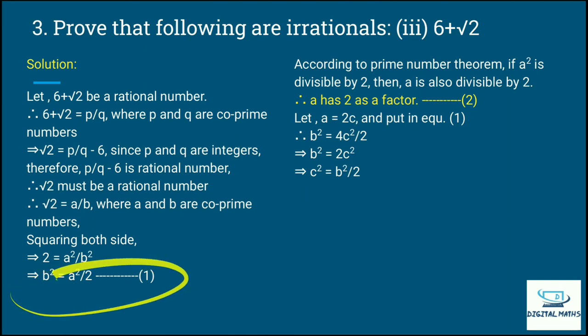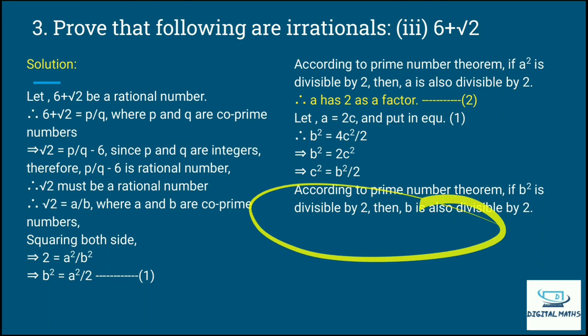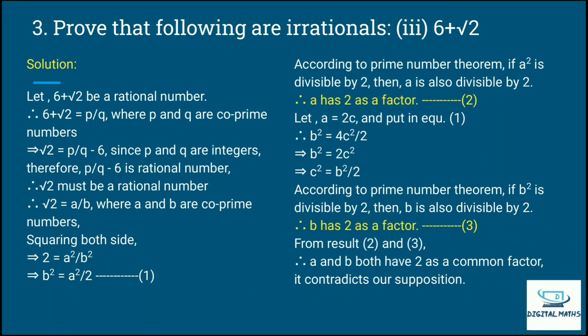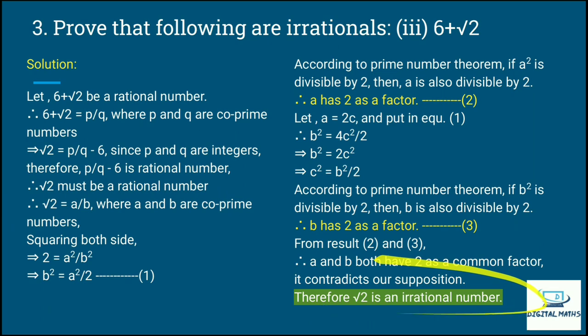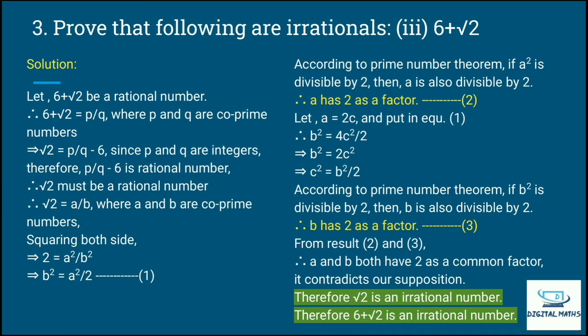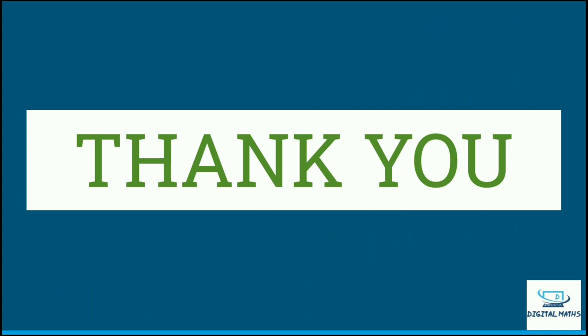By the prime number theorem, if a squared is divisible by 2 then a is also divisible by 2 — so a has 2 as a common factor. Substituting a equals 2c: b squared equals 4c squared by 2, so b squared equals 2c squared, and c squared equals b squared by 2. So b squared is divisible by 2, meaning b is also divisible by 2 — b has 2 as a common factor. From these results, both a and b have common factor 2, which contradicts our supposition that they are co-prime. So root 2 is not rational — it is an irrational number. Therefore 6 plus root 2 is also an irrational number. Thank you very much, stay with us. If you have any doubts, you can ask and we will provide the solution in video form.